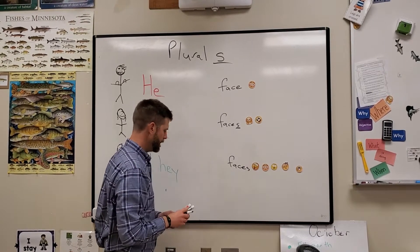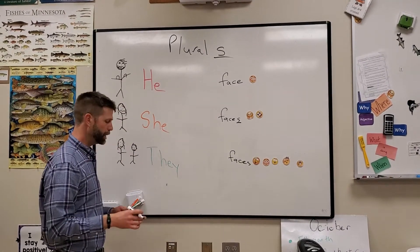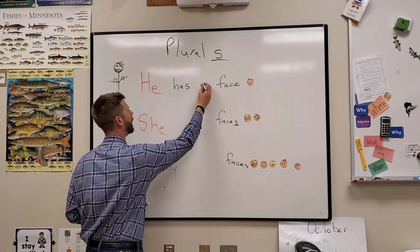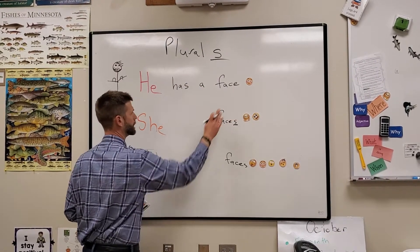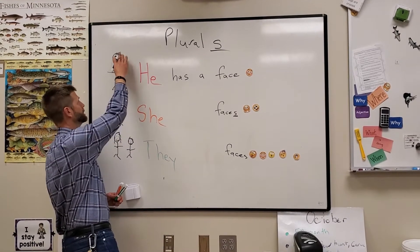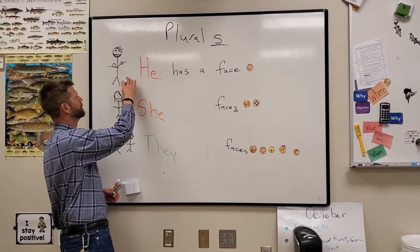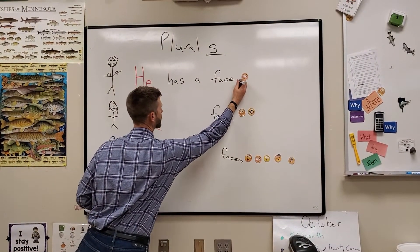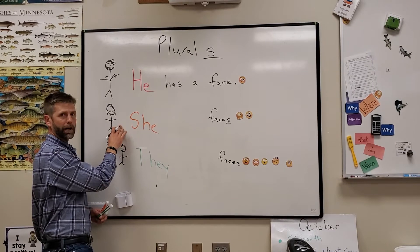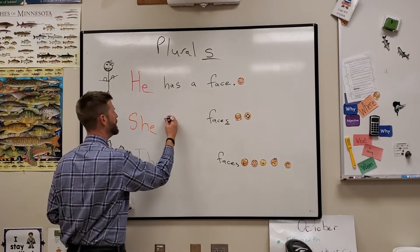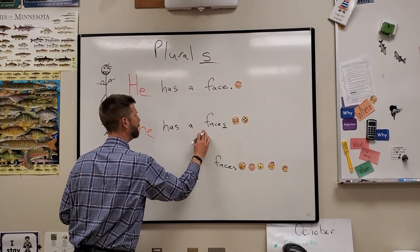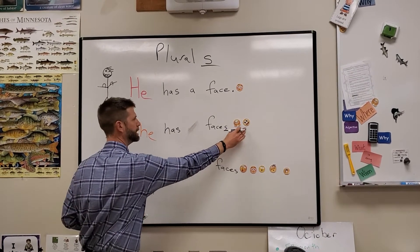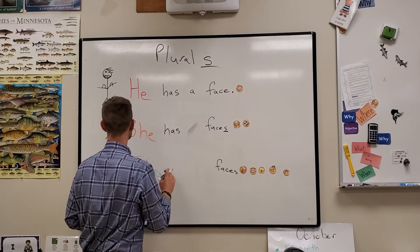So, if we were going to write a sentence about this, we could say: He has a face. Because he — the guy with the fancy hair and the mustache and the beard and the big muscles — he has a face. Don't forget your period. Or, it could be the girl, and we would say: she has faces. Right there — because there's more than one. She has faces.